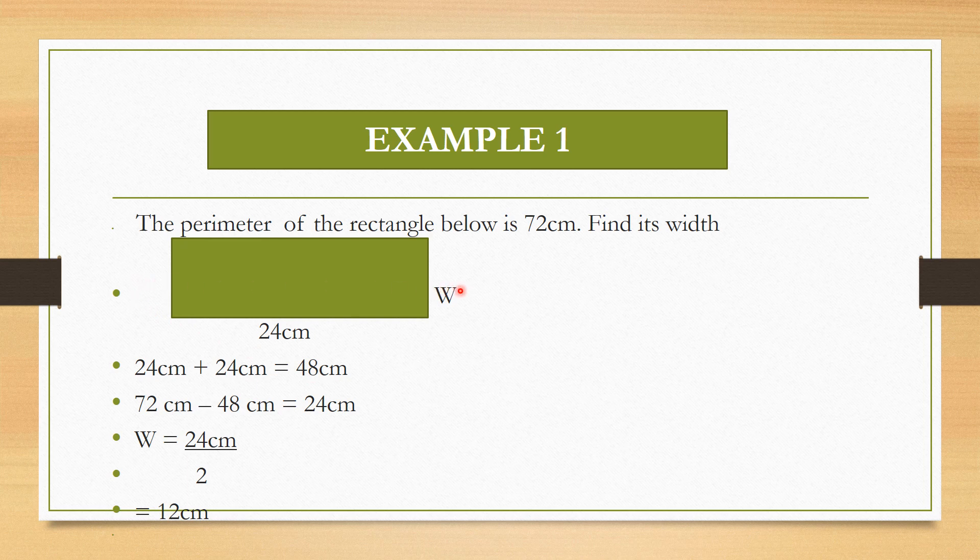The remaining sides are what we call the width, which are opposite and also equal. If you subtract 72cm minus 48cm, you will get 24cm for the two widths. But you only need to find one side, so you need to divide your answer by 2 to get the width of one side. 24 divided by 2 is 12cm. Our width is 12cm. This is a Class 4 question, I believe all of you can understand it. Let's move to our next example.